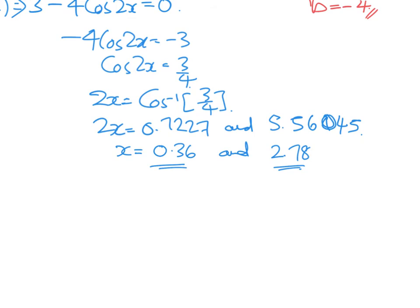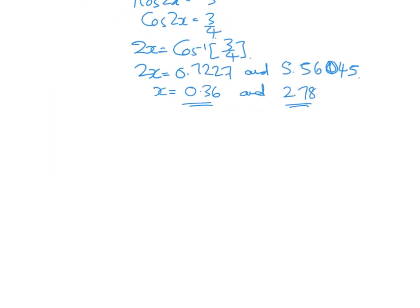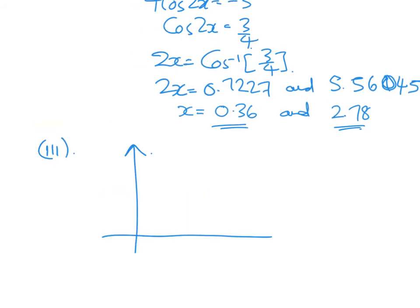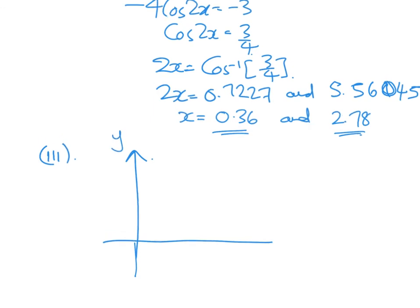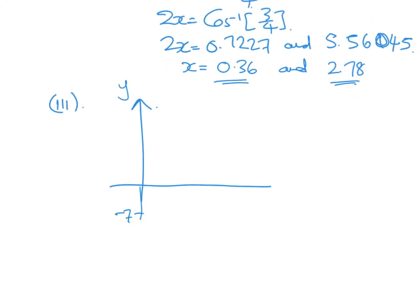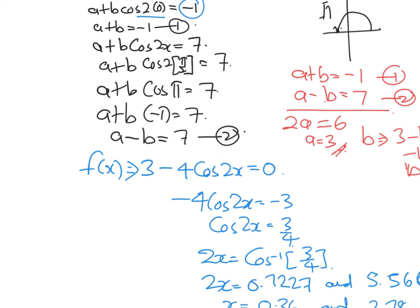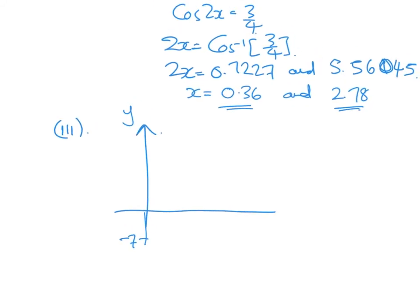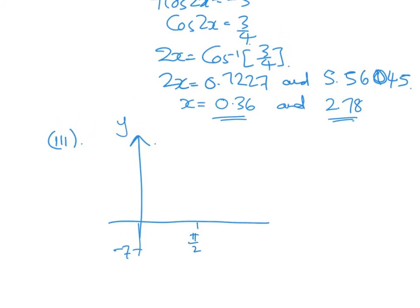For part 3, sketch the graph y = f(x). When x = 0, the graph cuts the y-axis at negative 1 — that's the starting point. At x = π/2, the graph reaches its highest value of 7. The graph rises from negative 1 up to 7 at π/2.